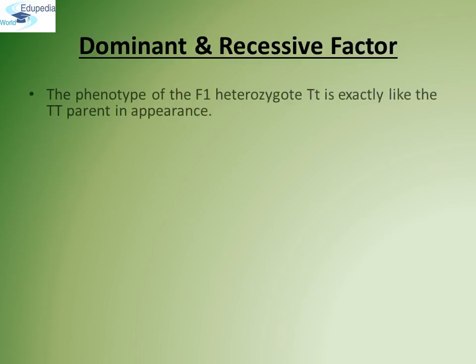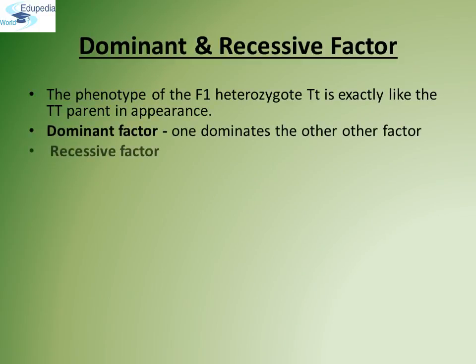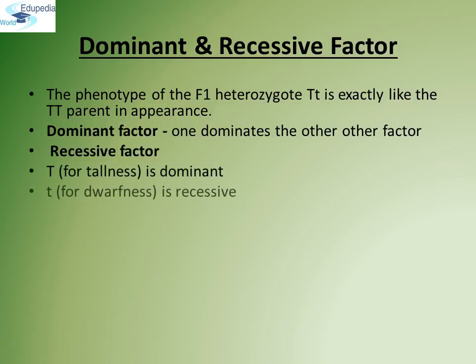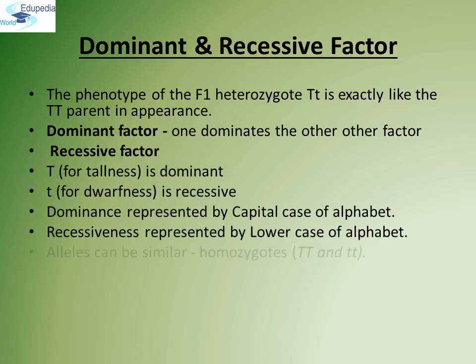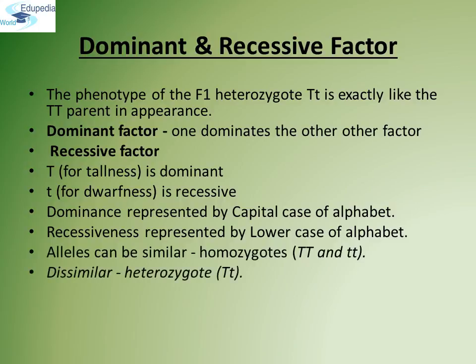Dominant and recessive factors: Mendel found that the phenotype of F1 heterozygous Tt is exactly like the homozygous TT parent in appearance. In a pair of dissimilar traits, one dominates over the other. The dominating trait is called the dominant factor and the other is called the recessive factor. Tallness dominates over dwarfness. Capital T represents the dominant character and lowercase t represents the recessive character. In homozygotes, alleles are similar: TT is homozygous tall and tt is homozygous dwarf. Alleles can also be dissimilar, as in a heterozygous plant.